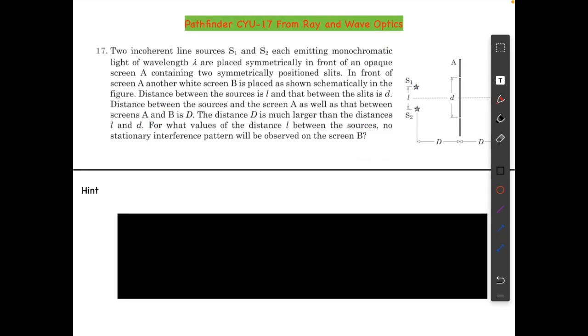Hello guys, here we have question number 17 from the Check Your Understanding exercise of the chapter Ray and Wave Optics from Pathfinder. Let's start. Two incoherent light sources S1 and S2 each emitting monochromatic light of wavelength lambda.